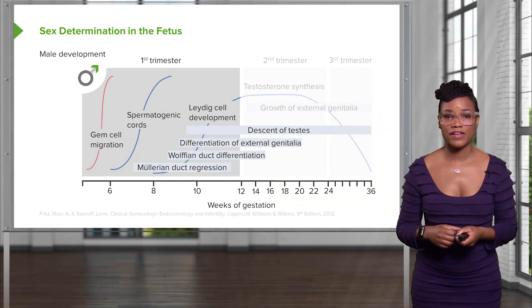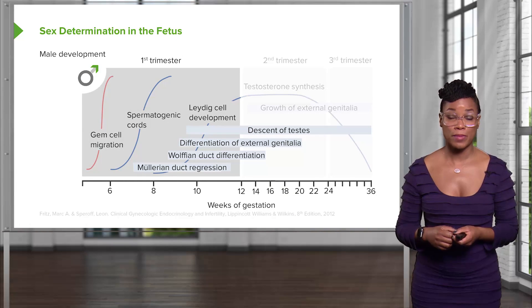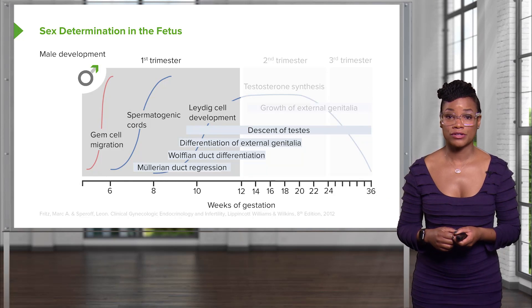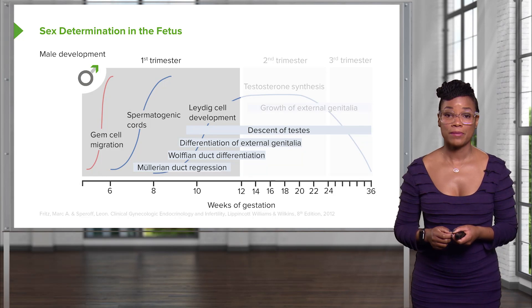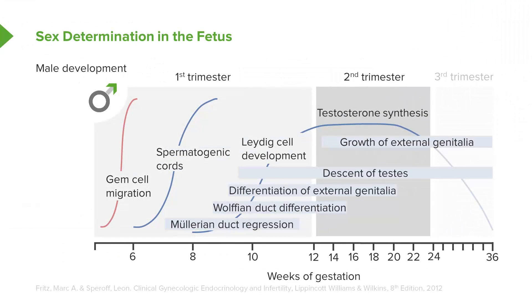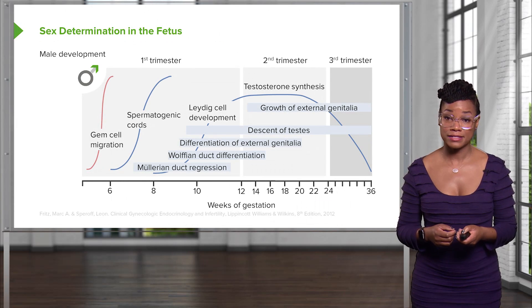In male development, during the first trimester, you see germ cell migration, spermatogenic cords, Leydig cell development which makes testosterone, differentiation of the external genitalia, Wolffian duct differentiation, and regression of the paramesonephros or Müllerian ducts. In the second trimester, testosterone causes growth of the external genitalia and descent of the testes from the abdomen into the scrotum. Pediatricians will normally check for the descent of the testes at the time of birth.